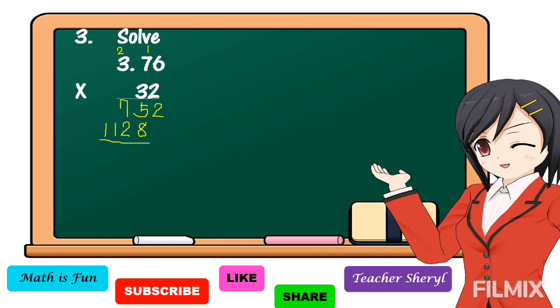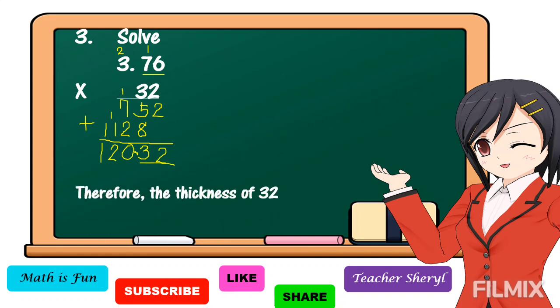Next, we are going to add the partial products. Bring down 2. 5 plus 8 is 13 — write 3, regroup 1. 1 plus 7 plus 2 is equal to 10 — write 0, regroup 1. 1 plus 1 is equal to 2. Bring down 1. Next, we count the decimal places in our factors — we have 2 decimal places, so we affix 2 decimal places in our product. Therefore, the thickness of 32 math books on the shelf is 120 and 32 hundredths centimeters.